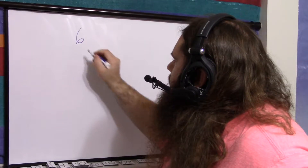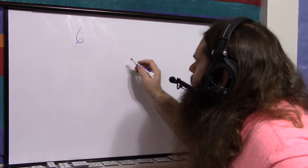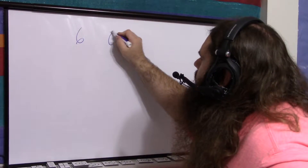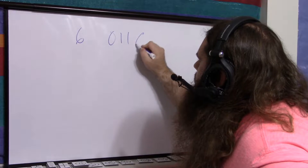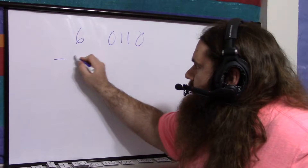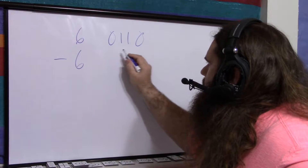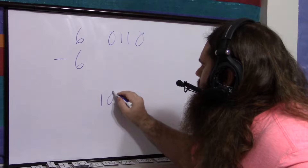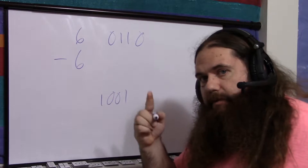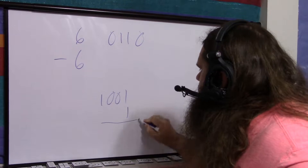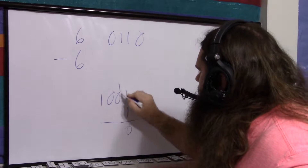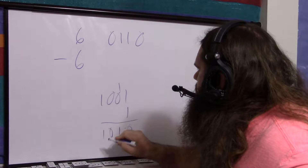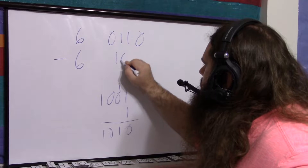Six, as a four-bit binary number, is 0110. To get negative six, we take the two's complement. First, we flip all the bits: 1001. Then we add one. So we carry, and we get 1010.